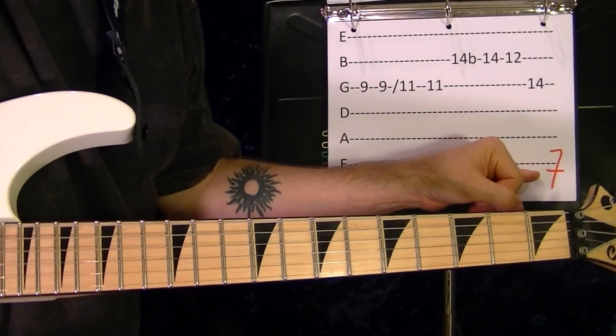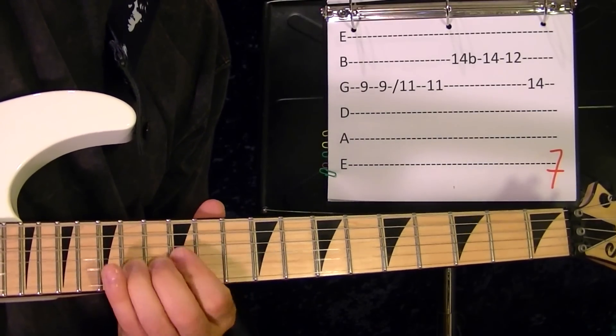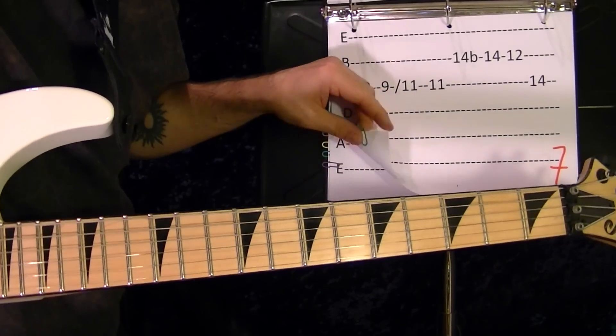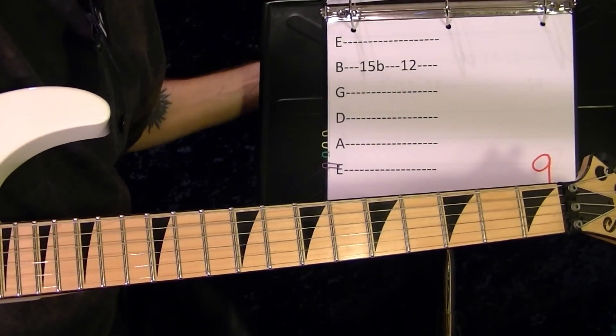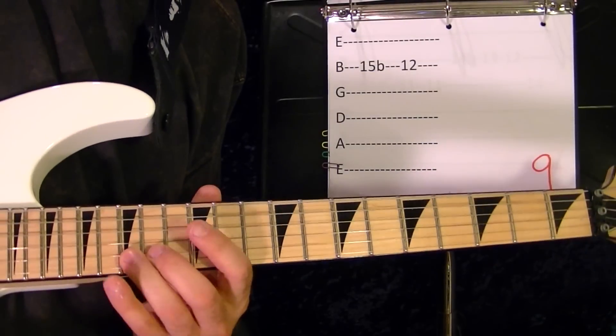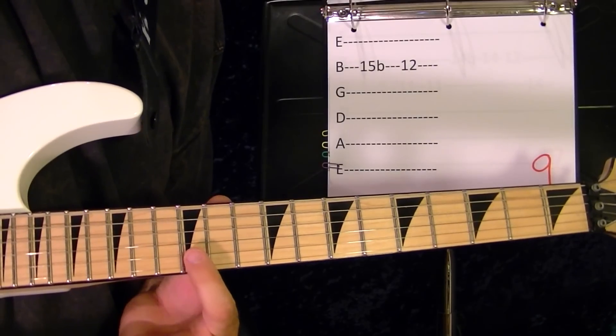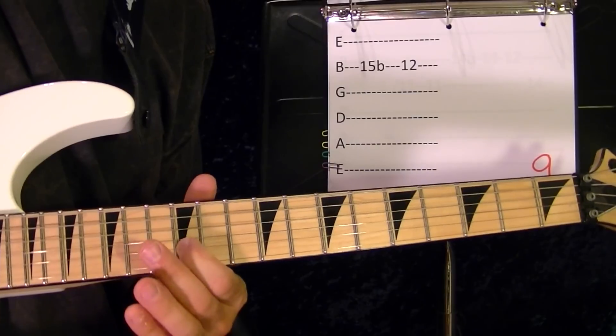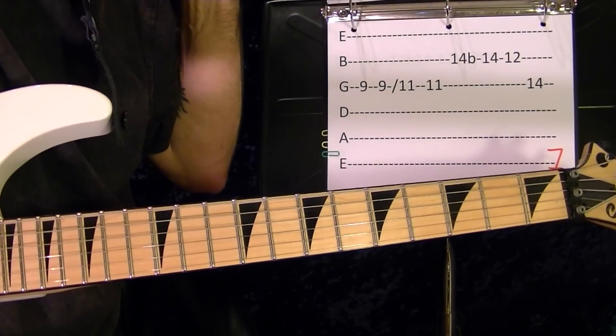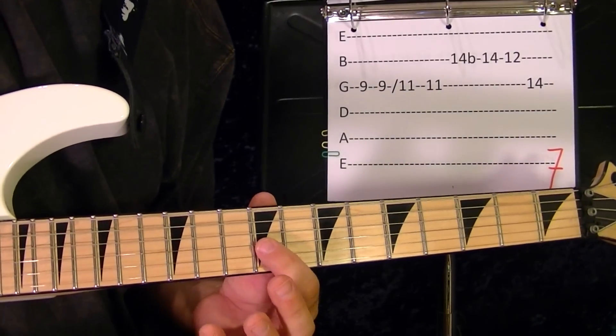Riff number seven as I just showed you before. Riff number nine: second string fifteenth fret bend up, second string twelfth fret. Okay, riff number seven you've already played it twice.